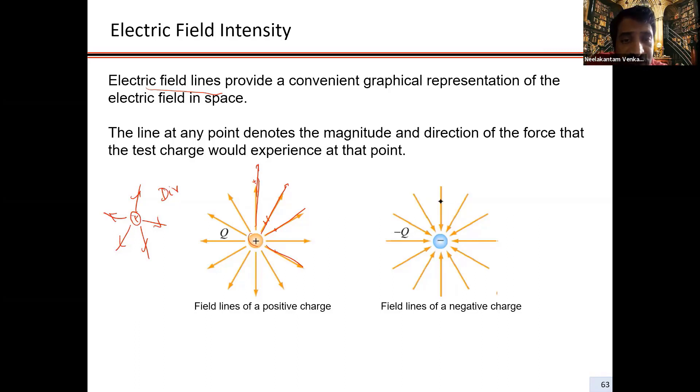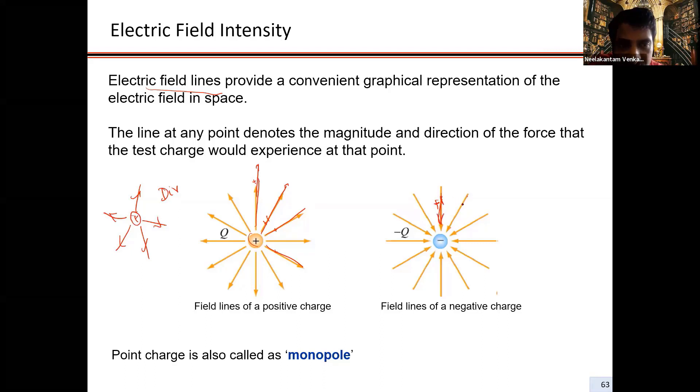Now imagine the negative field line. If I were to bring in a plus one Coulomb here, is it going to get attracted or repelled? It's going to get attracted. So the force acting on that charge is going to be in this direction. In this case, all the electric field lines are going to be going towards the charge.